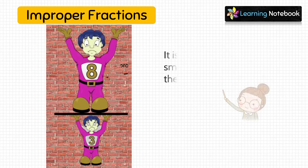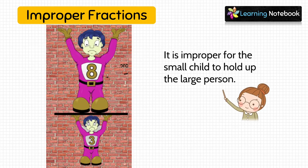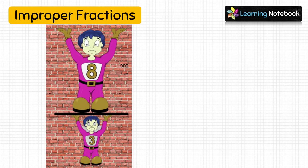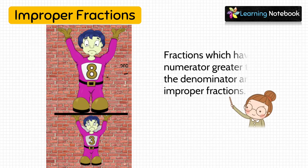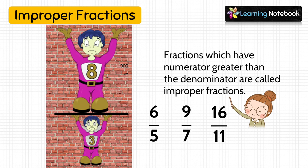Now let's understand improper fractions. It is improper for the small child to hold up the large person — fraction 8 by 3 is an improper fraction because it is improper for the small number 3 to hold up the large number 8. Fractions which have numerator greater than the denominator are called improper fractions. For example, 6 by 5, 9 by 7, and 16 by 11 are all improper fractions because their numerator is greater than their denominator.